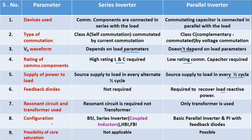Eighth one is configuration. As we have studied, the series inverter has different types of configurations: the basic series inverter, series inverter with coupled inductors, half bridge series inverter, and full bridge series inverter. Whereas the parallel inverter has only two configurations: the basic parallel inverter and parallel inverter with feedback diodes, which is also called the improved parallel inverter.